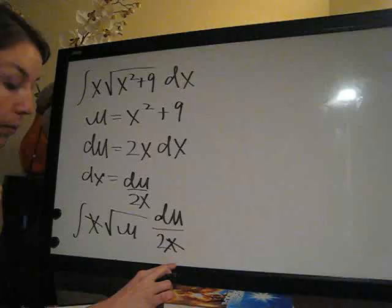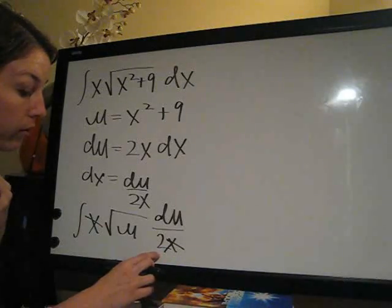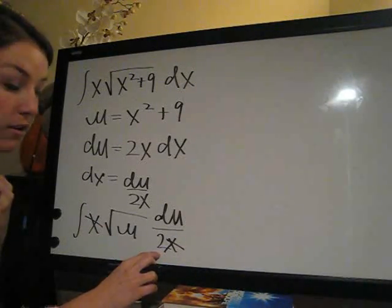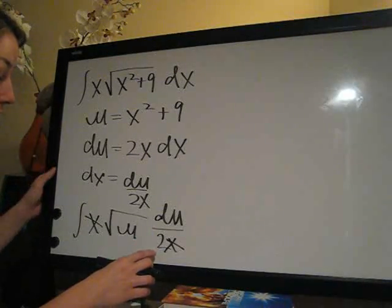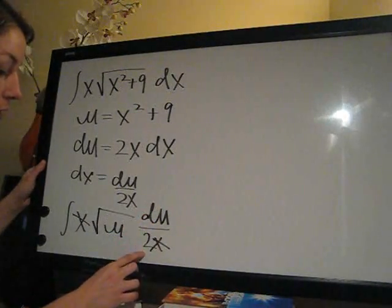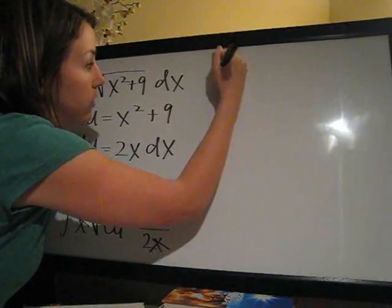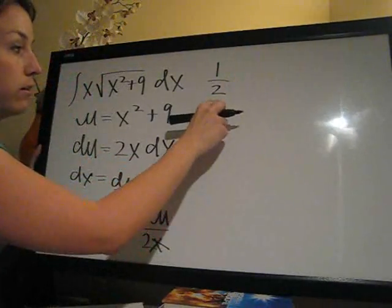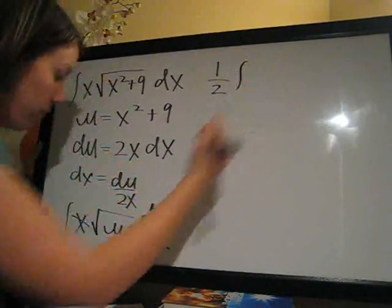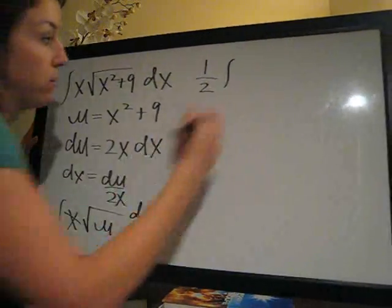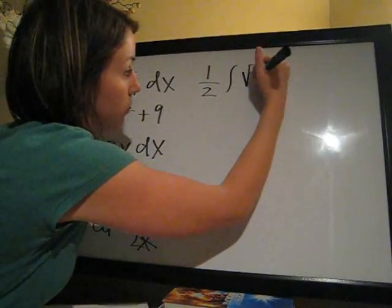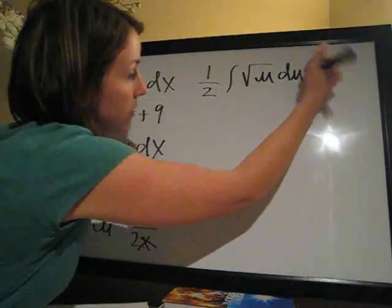And now what we're going to do is pull out the 2 in the denominator, or the fraction 1 half, from the integral to make this easier. So, we're going to pull out the 2, which is in the denominator. So, 1 half times the integral of, and all we're left with, is the square root of u du. So, square root of u du.